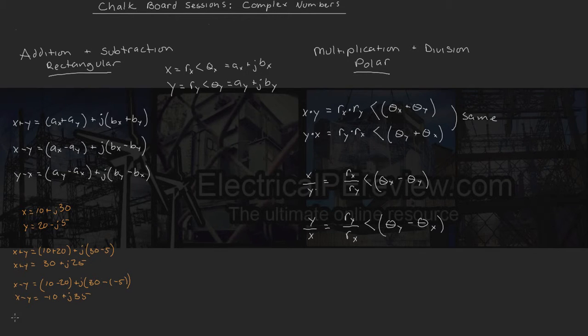And one more example, we're going to say y minus x is going to give us a real component of 20 minus 10 plus an imaginary component of minus 5 minus 30. We carry it out, and we end up with a real component of 10 minus an imaginary component of 35.